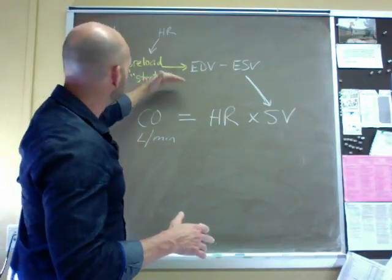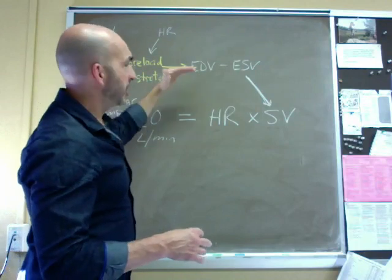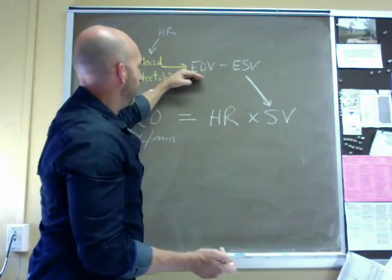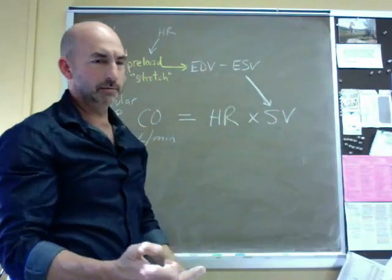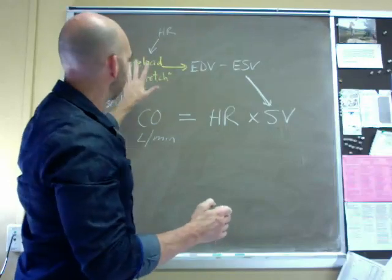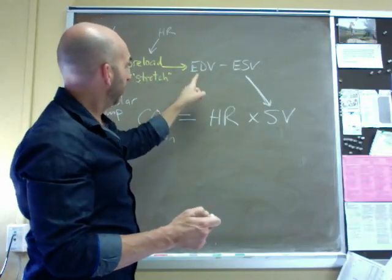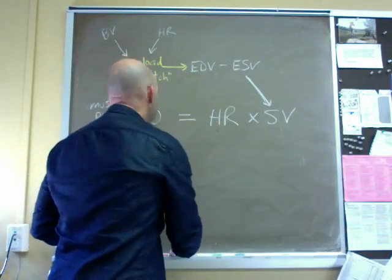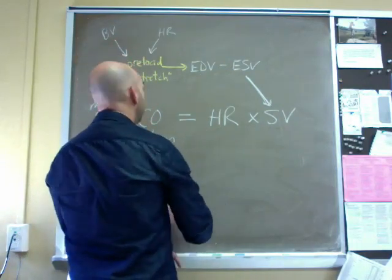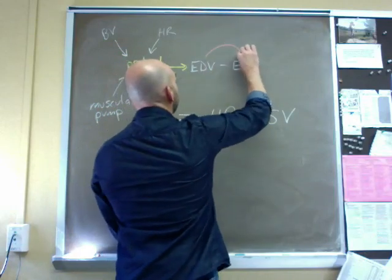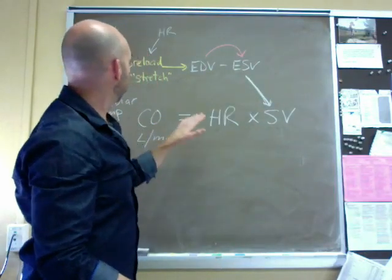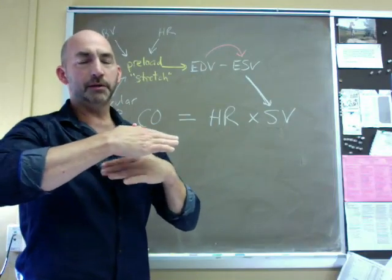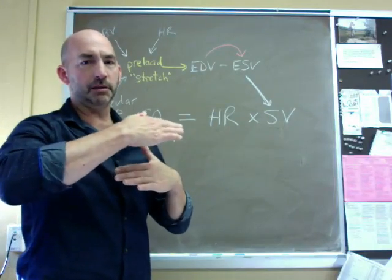Okay, so that's our preload, the amount of stretch. Now, again, if EDV goes up and if ESV were to stay the same, stroke volume would rise. Okay, so that explains the parameters we just talked about over here. Having said that, increasing EDV does cause ESV to change. So I want to put an arrow between these two.